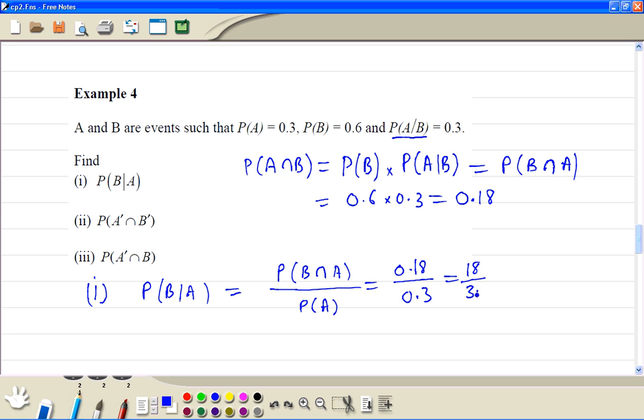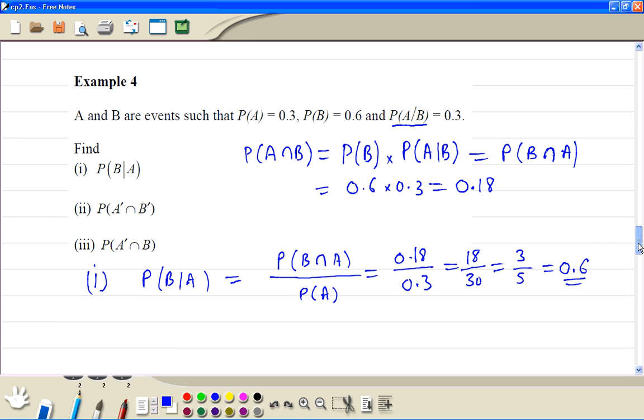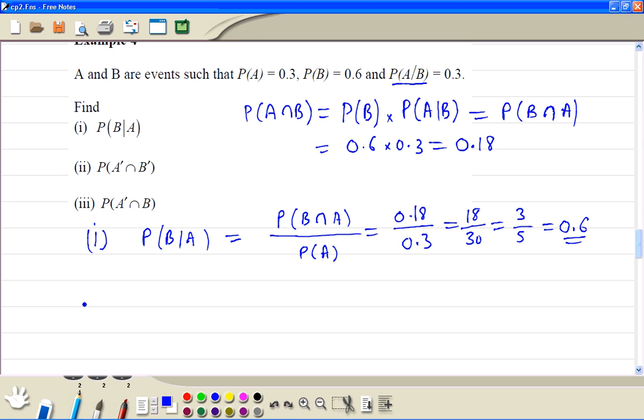So we can write 18 out of 30, we can divide top and bottom by 6, we get 3 out of 5, so 0.6.